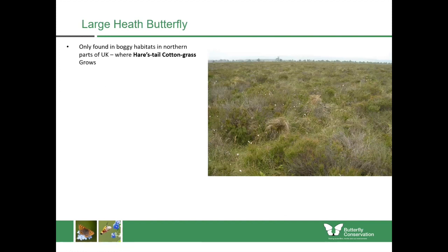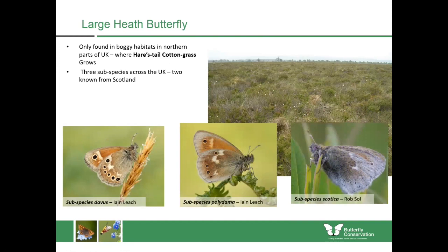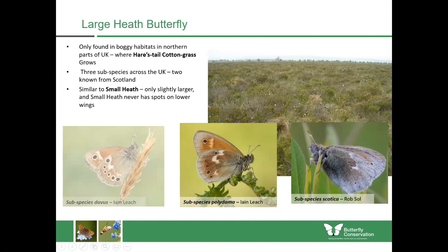Hare's-tail cotton grass is the caterpillar food plant of the large heath butterfly, one of our priority species for conservation. It's only found in boggy habitats in northern parts of the UK where hare's-tail cotton grass grows. There are three subspecies known from the UK and two are found in Scotland. Subspecies davus is found in more southerly parts and has really distinctive black eyespots on the underwings; subspecies scottica is found in more northerly parts with fewer spots. In Scotland we only get polydama and scottica. The large heath can be similar to the small heath, but small heath is found in any grassy habitat whereas large heath is only ever found in wet boggy habitats, and small heath never has spots on the lower wings.